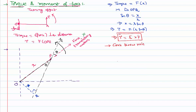To find the direction of the torque vector, we use the corkscrew rule or the right-hand thumb rule — both are the same. Take a screw: if r is one direction and F is another, rotate the head of the screw from r to F. The needle tip moves in the perpendicular plane in the upward direction, giving the direction of torque. This confirms that torque is perpendicular to both r and F.